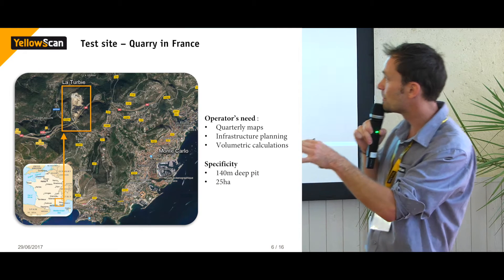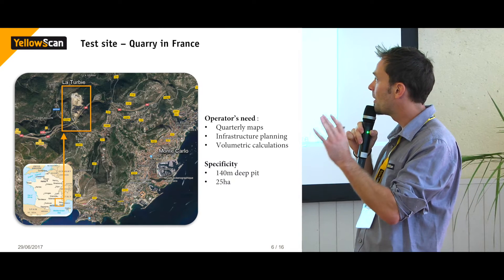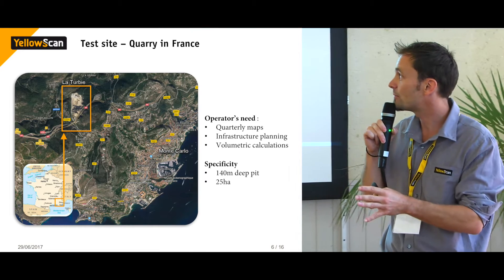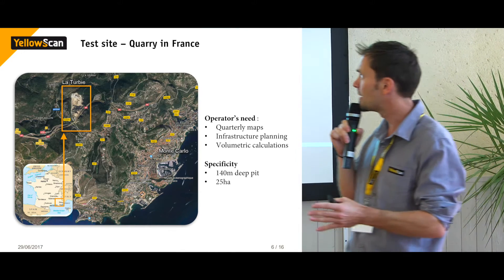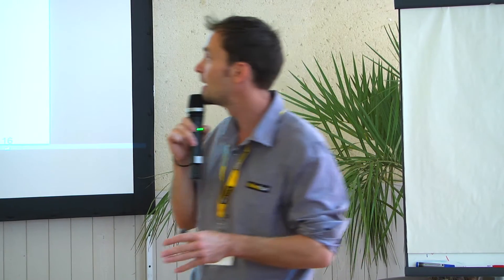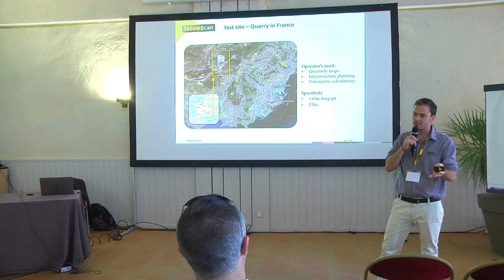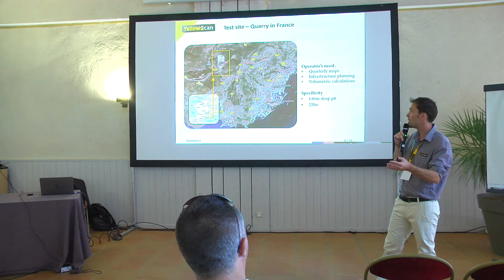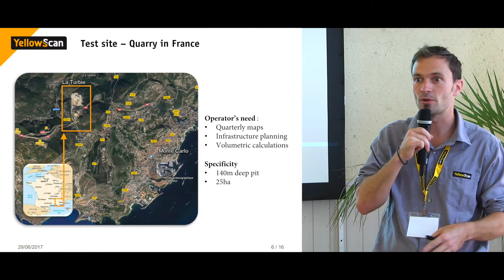Now that we've introduced the two methods, we'll look at the case study in more detail. We are talking about a quarry site south of France, just west of Monte Carlo. It's a small quarry, 25 hectares coverage, with fairly high steep walls because the terrain is rugged. This kind of data enables the operator to do quarterly basis maps, volumetric calculations, and infrastructure development work.